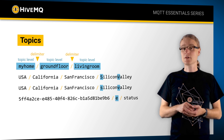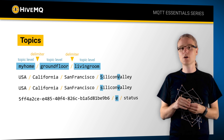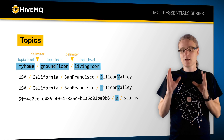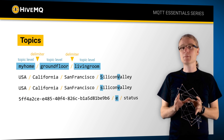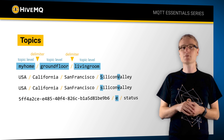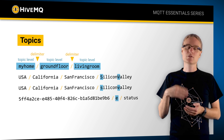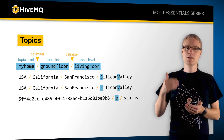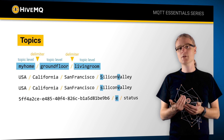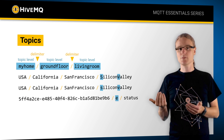Topics are very lightweight and they are dynamic. In MQTT, and this is quite different to other messaging systems you might know, you can have literally millions of topics in your system and it's absolutely fine for the broker, because there is a super lightweight structure and they are dynamic. You don't need to create topics beforehand — as soon as you want to use a topic, a client can just publish to it or subscribe to it.